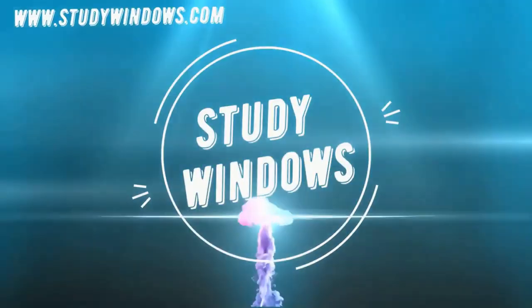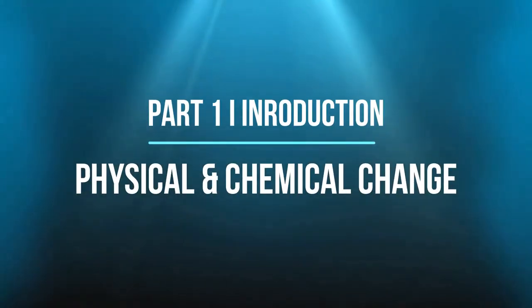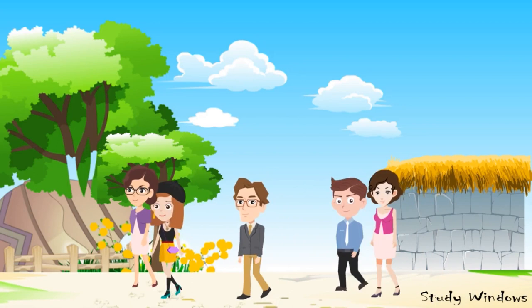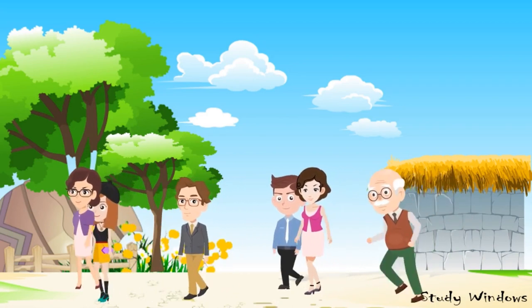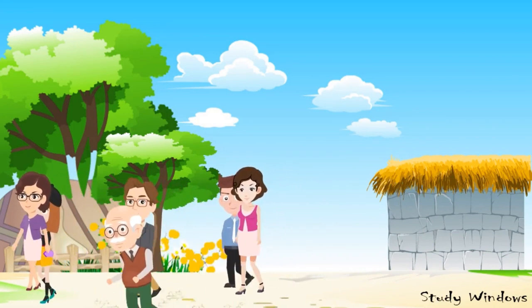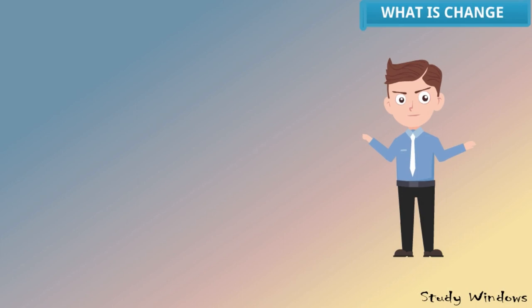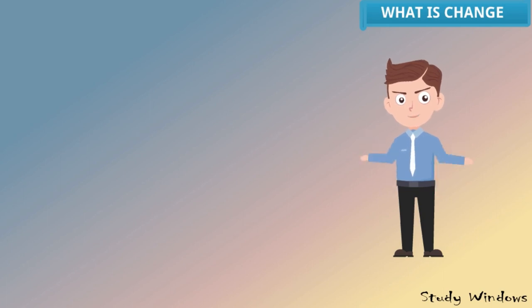Hi everyone, this is Firan and welcome to Study Windows. Today we are going to discuss the introduction of physical and chemical change. We see a lot of people walking, running, and jogging in the park — even old people. Why are these people exercising regularly? Because some fatty people want to be slim and old people want to be stronger, so everyone wants change.